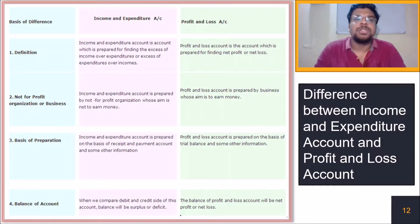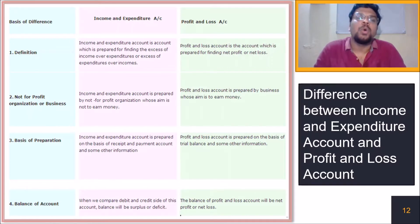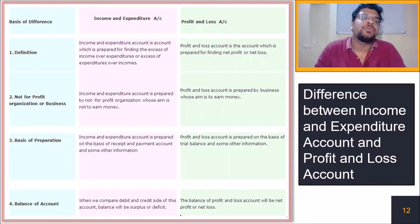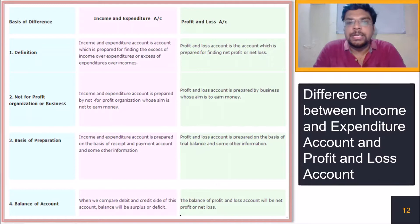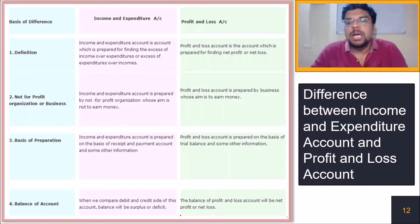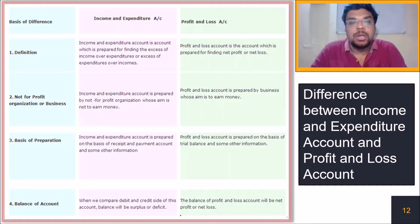The income and expenditure account is an account prepared for finding the excess of income over expenditure or excess of expenditure over income. The profit and loss account is the account prepared for finding net profit or net loss.